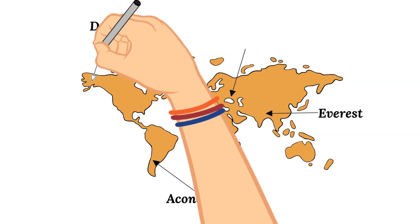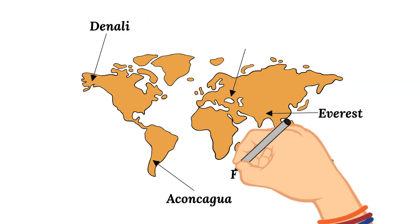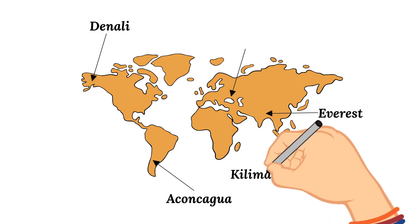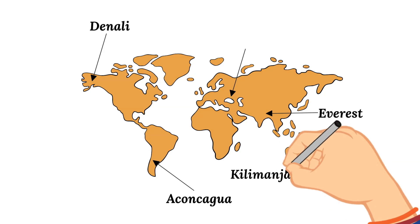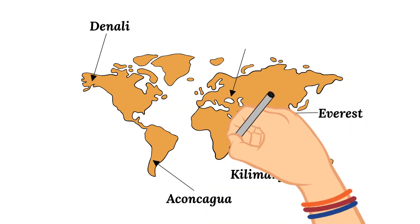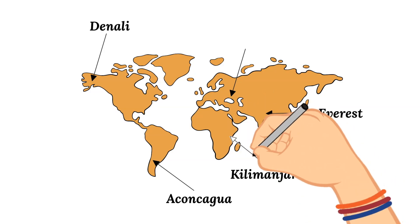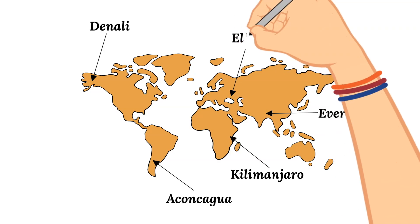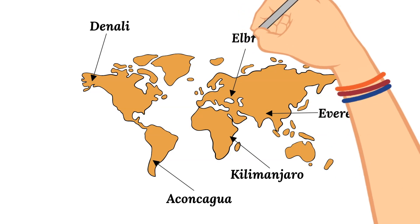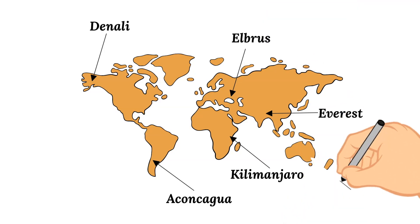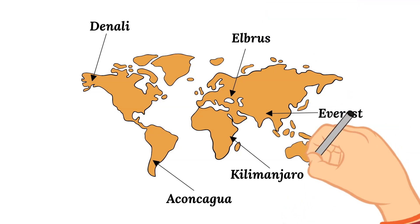Next up is Kilimanjaro, found in Africa — specifically in Tanzania — and it reaches 19,340 feet tall. Next is Elbrus, the tallest mountain in Europe, found in Russia. It is 18,510 feet tall.